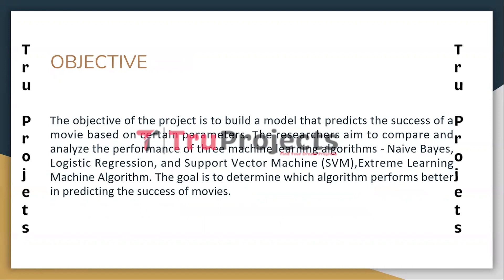The project aims to develop a predictive model for assessing the success of movies by considering specific parameters. The researchers focus on comparing and analyzing the performance of four machine learning algorithms: Naïve Bayes, Logistic Regression, Support Vector Machine, and Extreme Learning Machine. The objective is to determine which algorithm demonstrates superior performance in predicting the success of a movie.